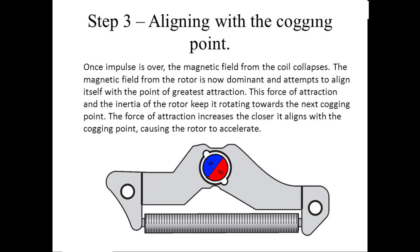Step 3: Aligning with the cogging point. Once the impulse is over, the magnetic field from the coil collapses. The magnetic field from the rotor is now dominant and attempts to align itself with the point of greatest attraction. This force of attraction and the inertia of the rotor keeps it rotating towards the next cogging point. The force of attraction increases the closer it aligns with the cogging point, causing the rotor to accelerate.